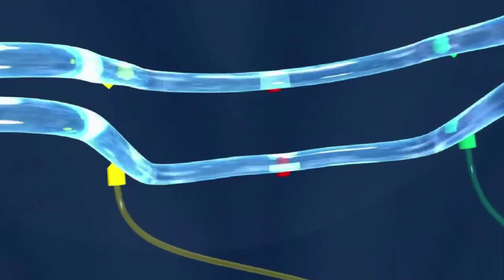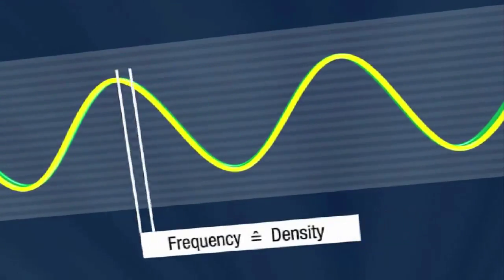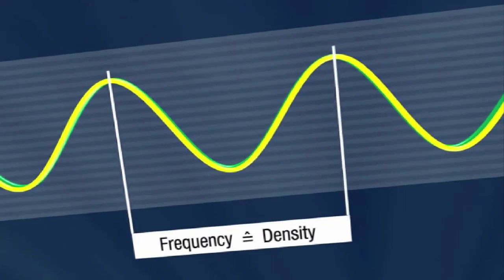Should the density of the media need to be determined, it is simply computed by evaluation of the oscillation frequency of the measuring tubes.